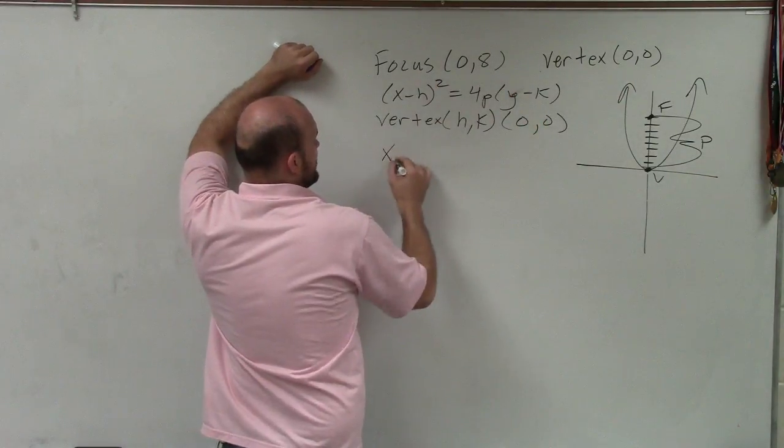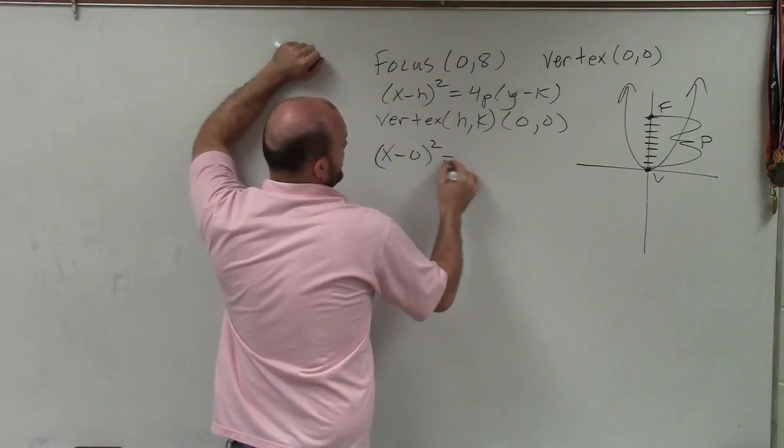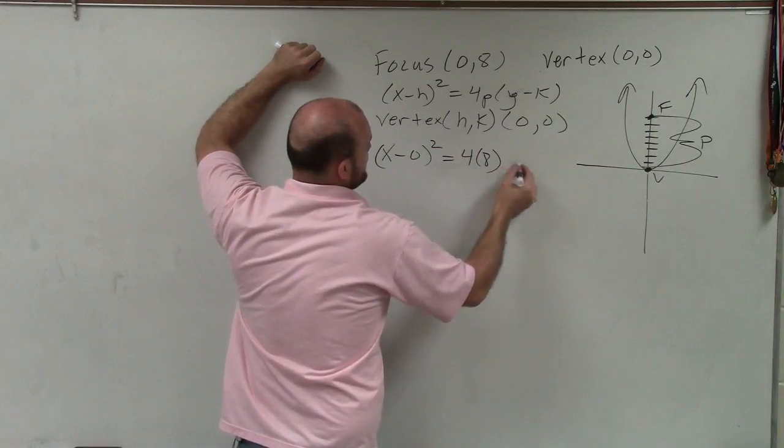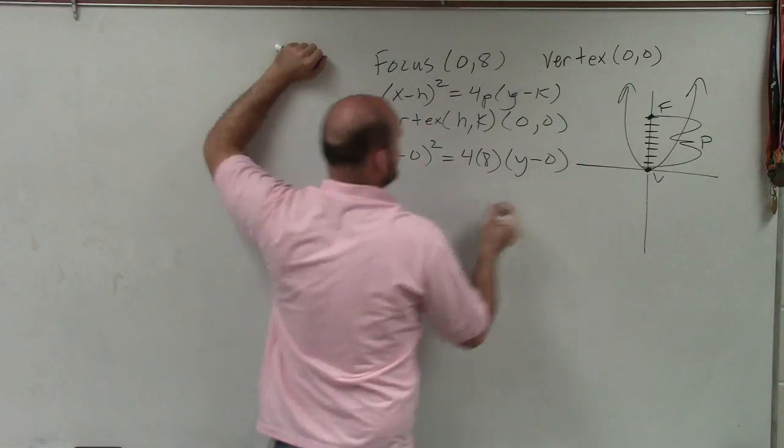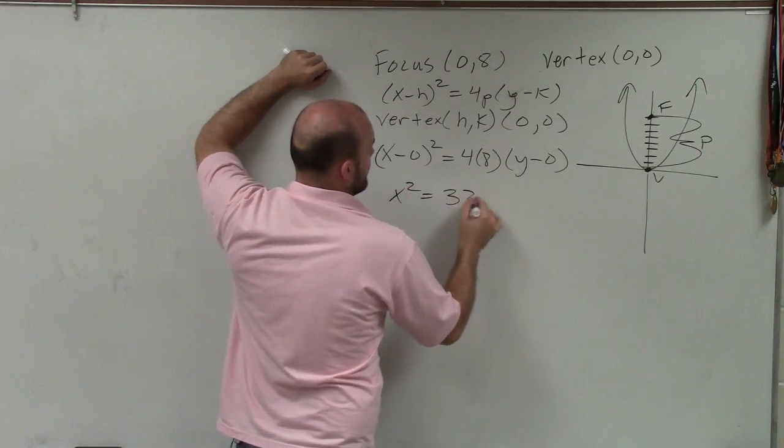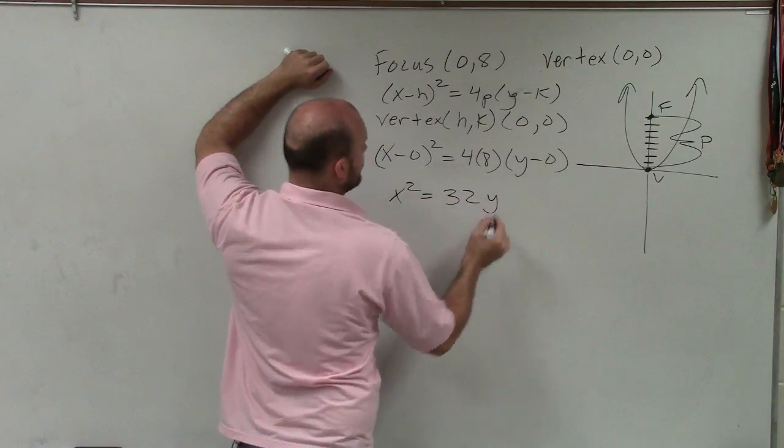So now let's plug in our information. So I have x minus 0 squared equals 4 times 8 times y minus 0. Simplifying this, I have x squared equals 32 times y.